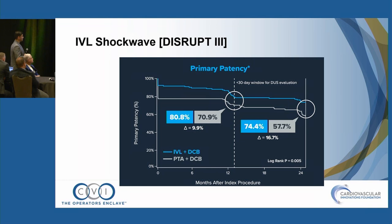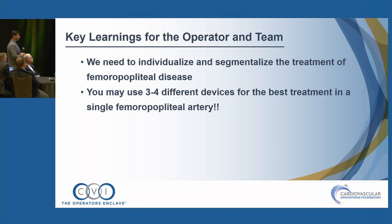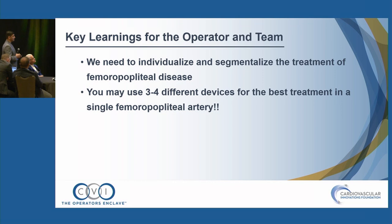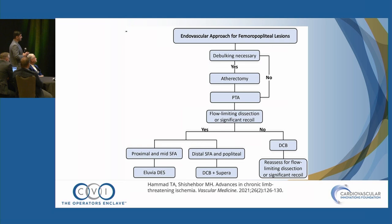Key learning points: we have too many tools but not enough consensus, so we need to individualize and segmentalize the approach to femoral popliteal disease depending on how we cross (intimal vs. sub-intimal), patient characteristics, plaque morphology (heavily calcified), and location of lesion (proximal SFA, distal SFA, versus popliteal, versus mid-SFA). Sometimes you may have to use different devices for the same patient. The published VASA Medicine Journal algorithm shows that depending on whether debulking is necessary, you reassess after PTA for recoil and dissection. If no dissection, proceed with DCB, then done. If dissection occurs, destination therapy depends on location — DES for low bifurcation, proximal and mid-SFA, or DCB plus Supera for distal SFA popliteal.